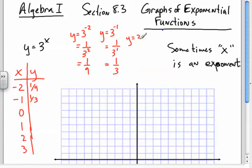y is equal to 3 to the 0, well, that's just 1. We know that. Anything to the 0 is 1, except 0, of course.